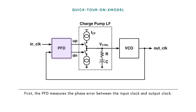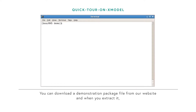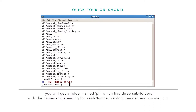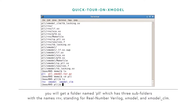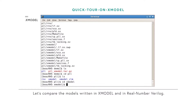First, the PFD measures the phase error between the input clock and output clock. Then, the loop filter, for instance made of a charge pump, adjusts the control voltage to the VCO so that the output clock generated by the VCO has a phase lock to that of the input clock. You can download a demonstration package file from my website. When you extract it, you'll get a subfolder named PLL, which has three subfolders named R, V, standing for Real Number Verilog, X-Model, and X-Model underscore CLM.